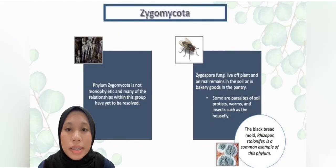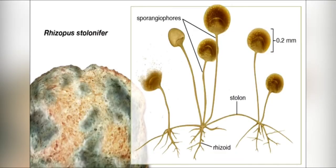The fourth fungi phylum is Zygomycota. This phylum is not monophyletic, and many of the relationships within this group have yet to be resolved. Zygospore fungi feed on plants and animal remains in the soil or on bakery goods in the pantry. Some are parasites of soil protists, worms, and insects such as the housefly. The black bread mold Rhizopus stolonifer is a common example of this phylum.